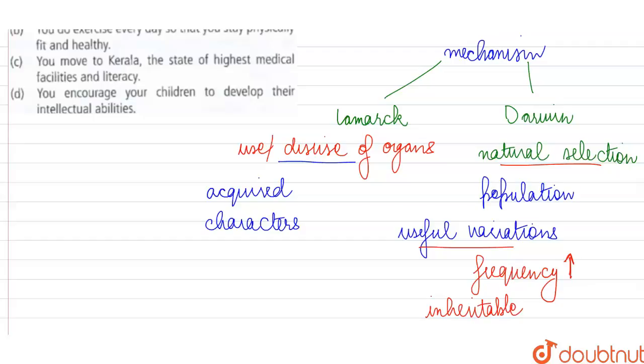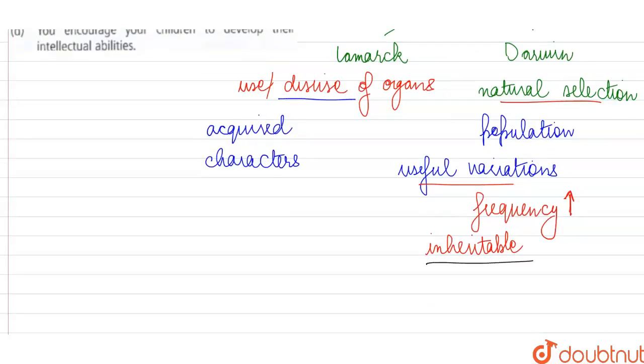Only the inheritable variations can be passed on over the generations, but the acquired characteristics are not inheritable.